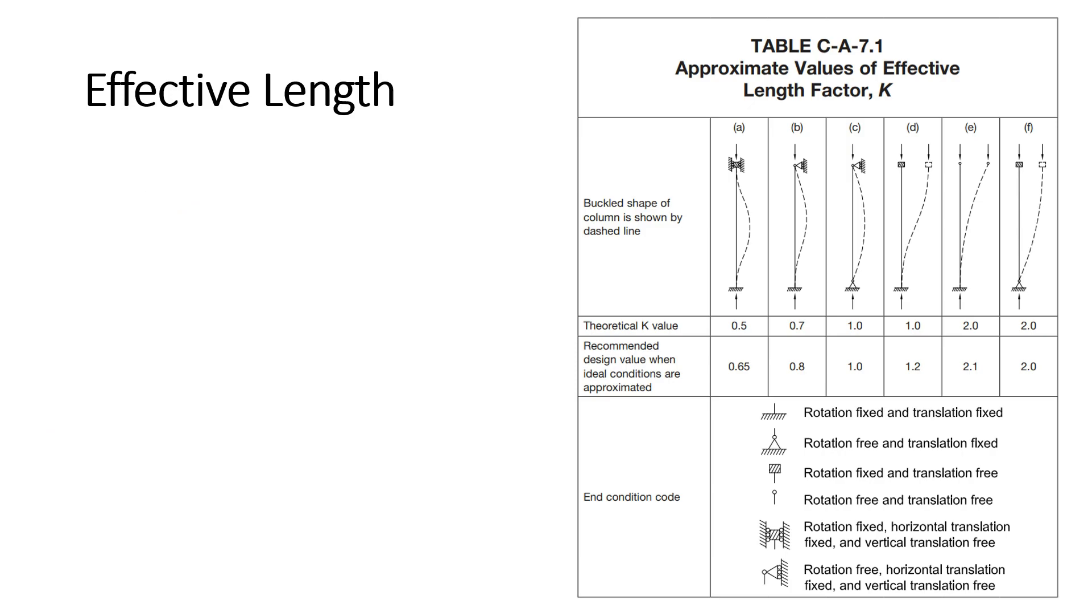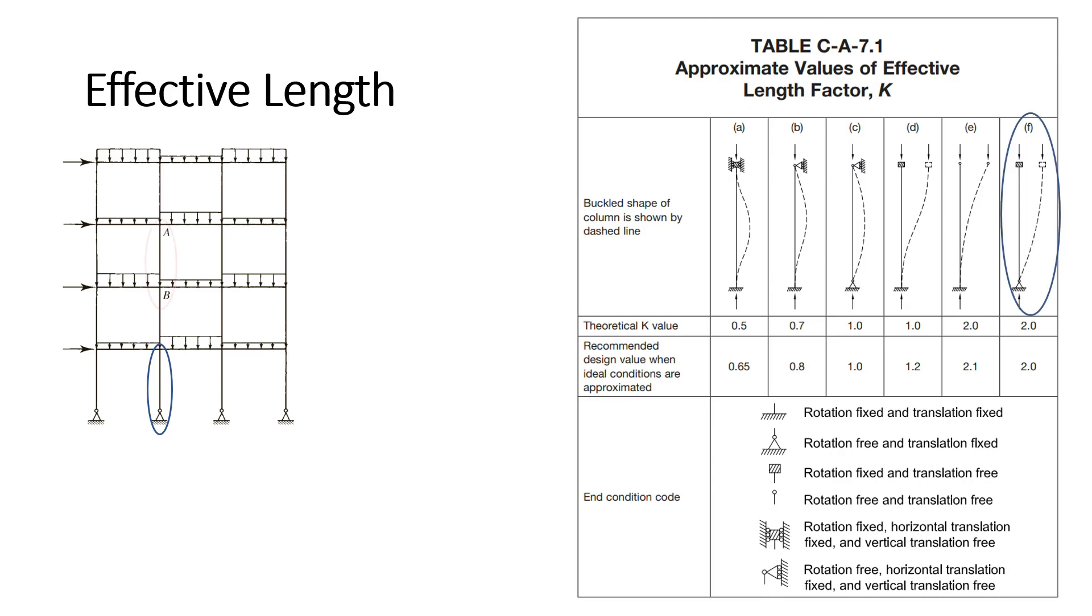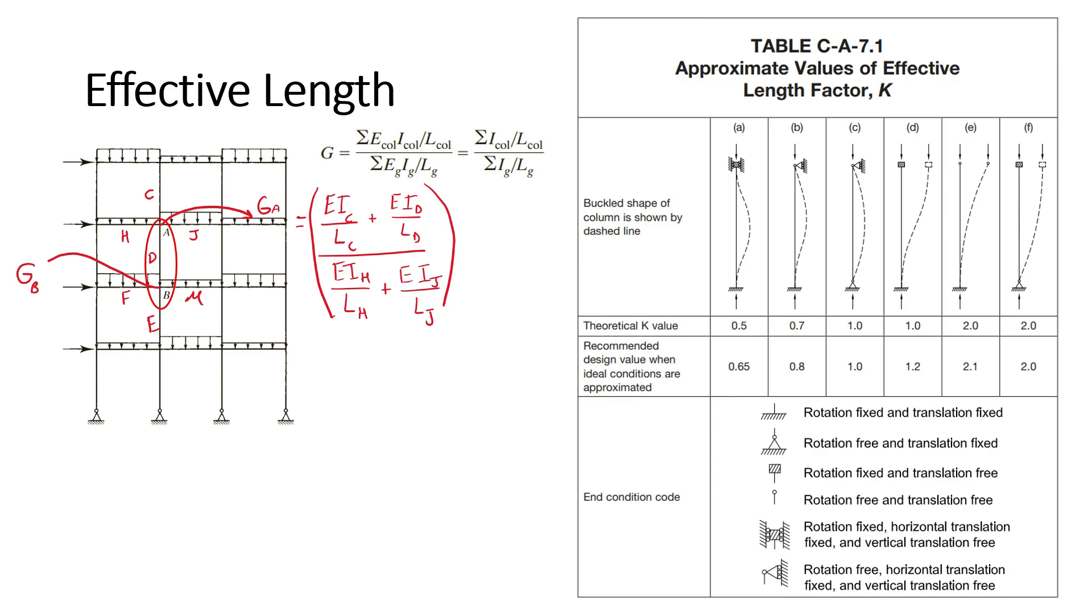For individual columns, it is easy to use table C-A-7.1 to determine the effective length. However, when having a continuous frame, it is slightly more complicated. Because there is no bracing to prevent side sway of the frame, the effective length of any bottom column can be estimated by case F in the table, while the effective length of column AB can be estimated by case D in the table. However, a better way would be to account for the rigidity provided by the girders and nearby columns to get better approximation of the end conditions and thus the value K. This would be by calculating the value G at the ends of the column, which is a function of the bending stiffness EI of the nearby columns and girders. For example, G at joint A can be calculated as follows. Similarly, GB can be computed at joint B.